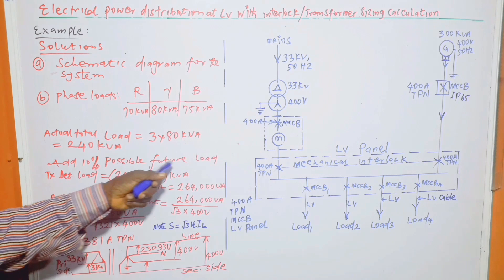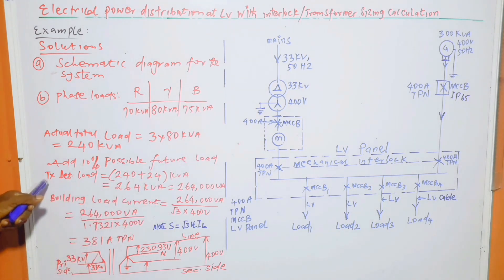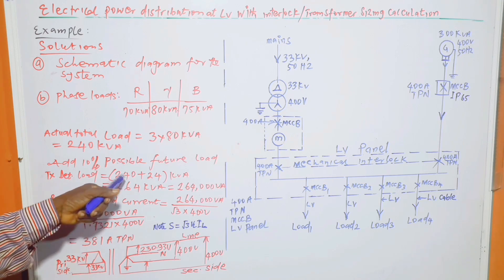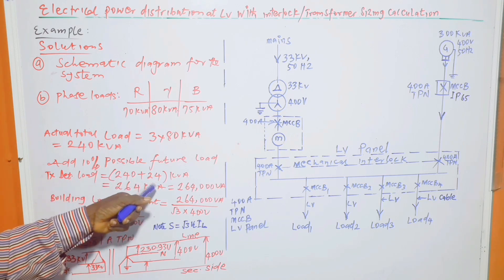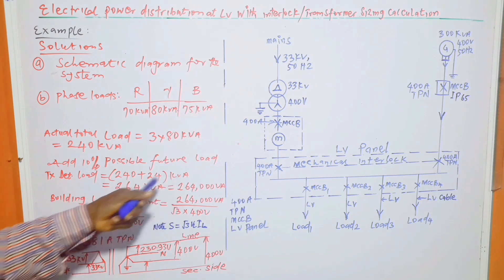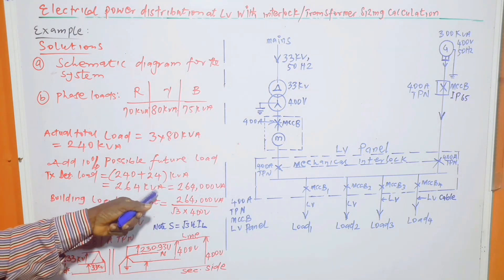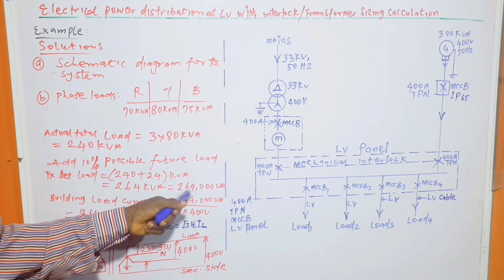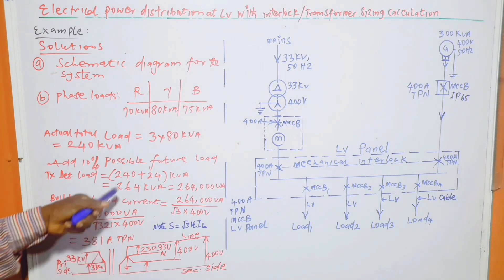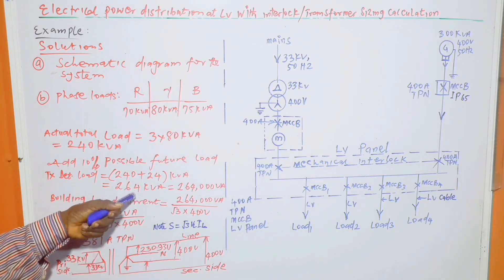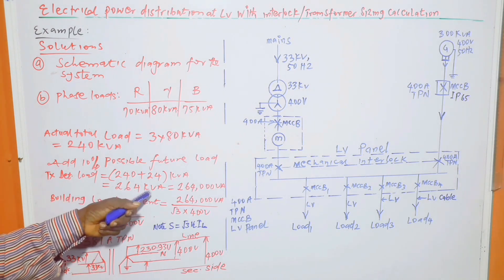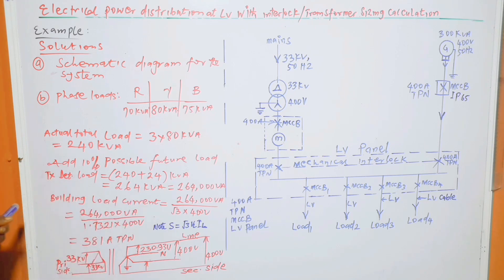Now, add 10% possible future load, then transformer rating determining load is equal to 240 plus 24 kVA, which is equal to 264 kVA, or 264,000 VA. So this is the building load, 264 kVA, which is the answer to the B part.